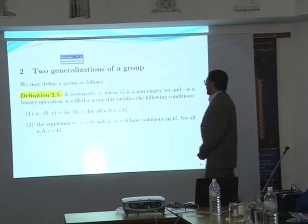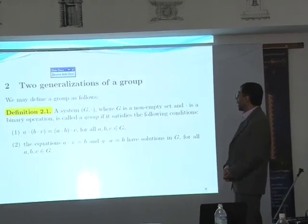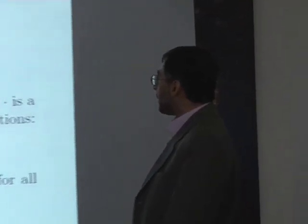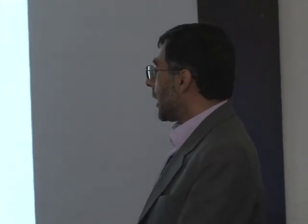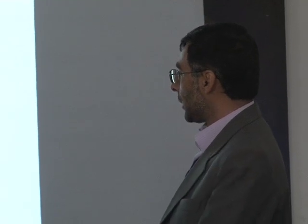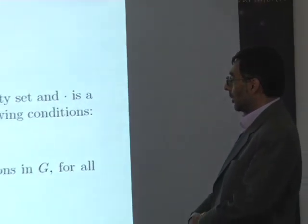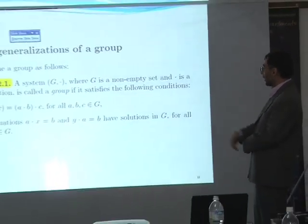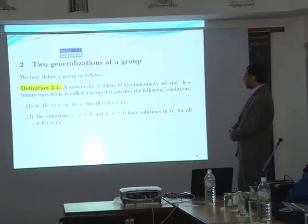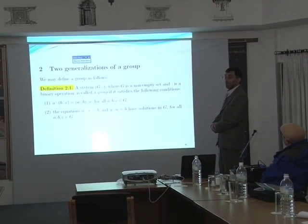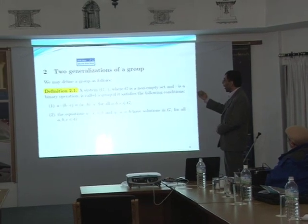Now I want to explain about two generalizations of a group. This definition is equivalent to the first definition of a group. In this definition, you cannot see the identity and the inverse. You have only the associative law and two equations — for each a and b, the equations are solvable. This is the equivalent definition of a group.